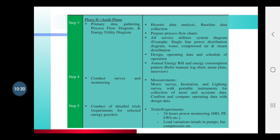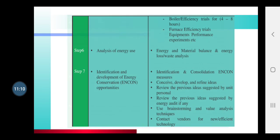Step five: Conduct trial experiments for the selected energy guzzler — you have to perform experiments. For example, you can monitor anything for 24 hours, tracking power factor and kilowatt-hours. You cannot calculate the energy for the whole day with a single constant value because load is never continuously constant — loads keep changing. So you can observe over 24 hours where the load changes occurred, and that will also help you.